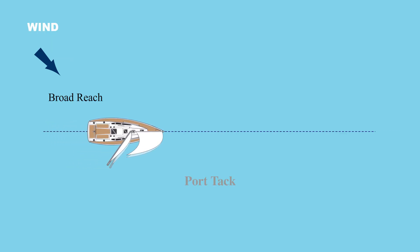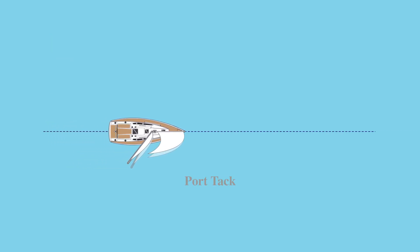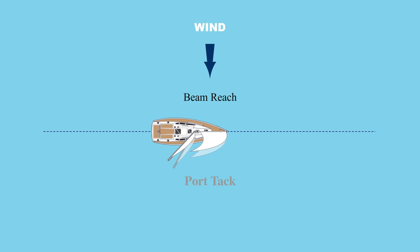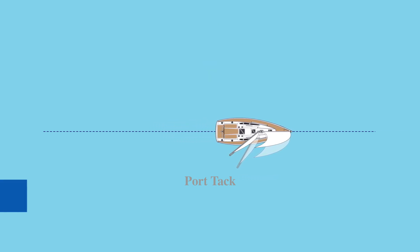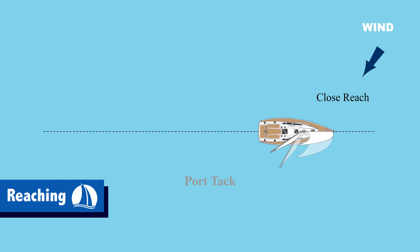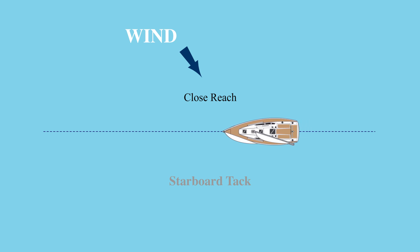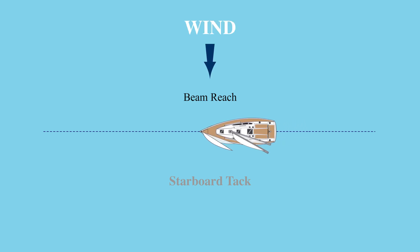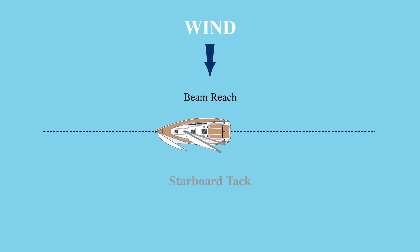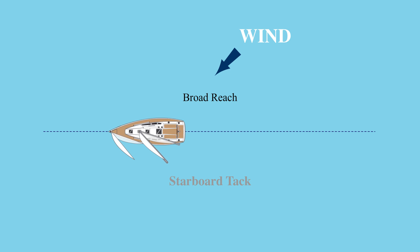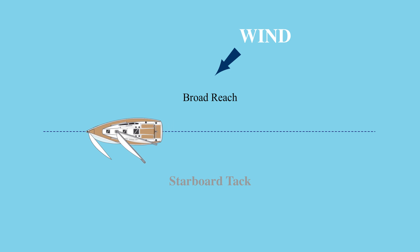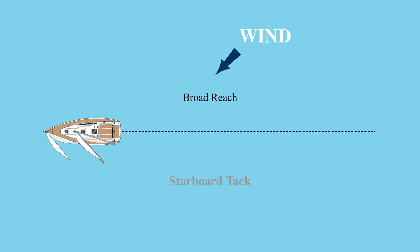And finally, if not beating upwind close-hauled or sailing directly downwind on a run, you're reaching. There are three reaches: close, beam, and broad. Notice how the sails change for the different reaches.